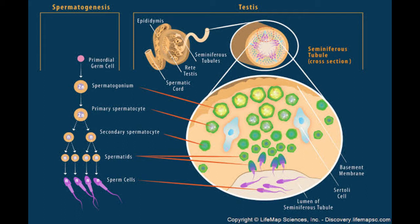The secondary spermatocytes, although haploid, still contain two chromatids per cell. The secondary spermatocytes undergo a second meiotic division, or meiosis 2. Each cell produces two spermatids that are haploid. A total of four spermatids are produced by this process. The Sertoli cells residing in the seminiferous tubules aid in the maturation process of the spermatids. The matured spermatids, called sperm cells or spermatozoa, are stored in the epididymis, ready to leave the male body and fertilize an egg.